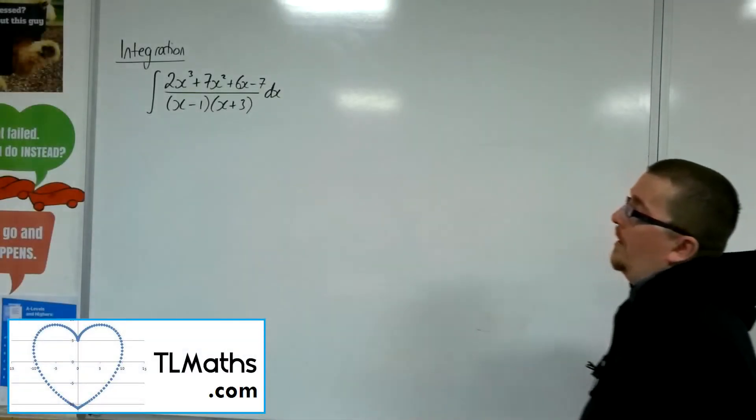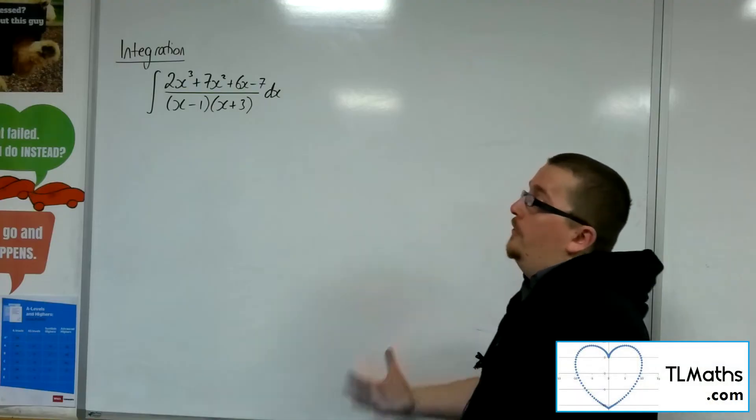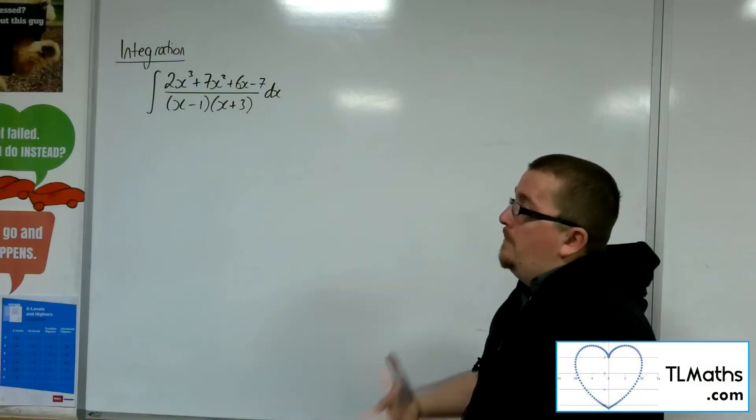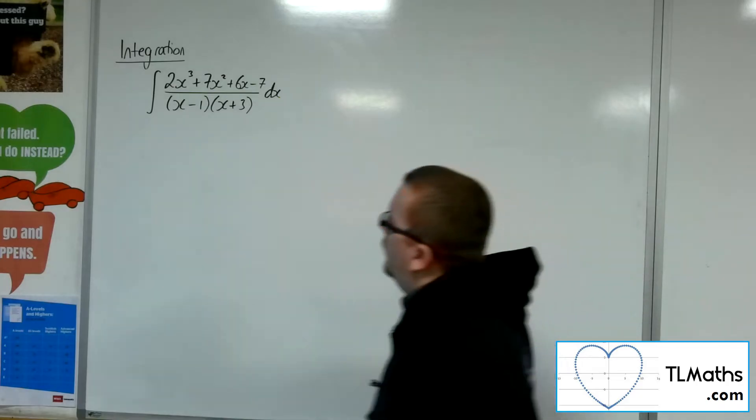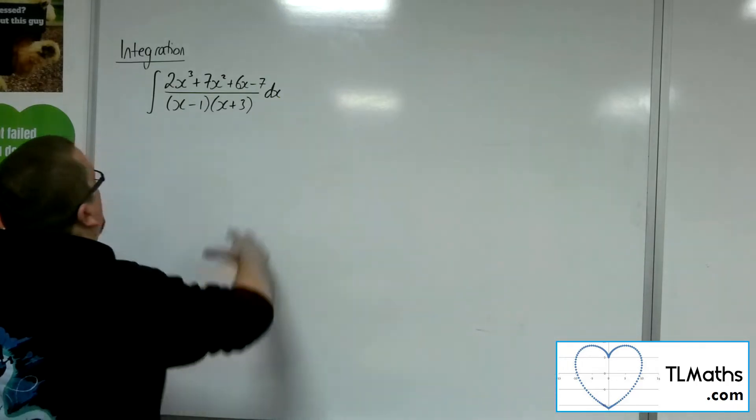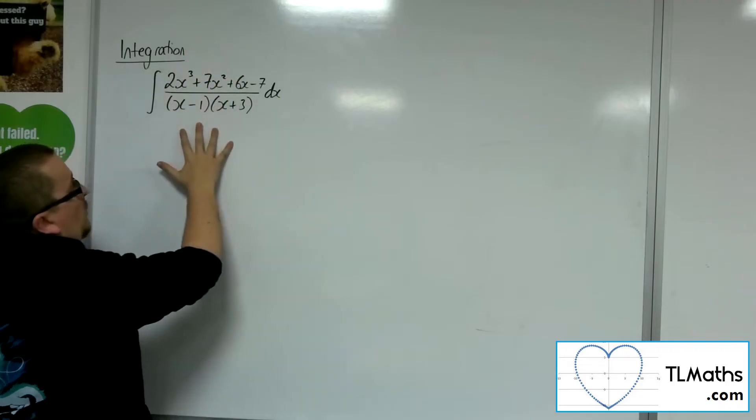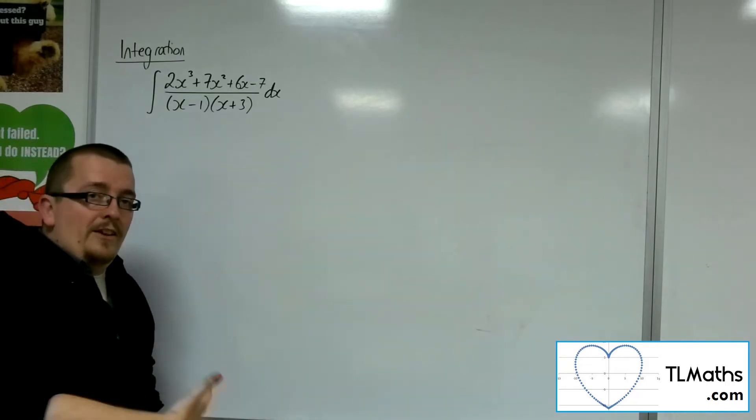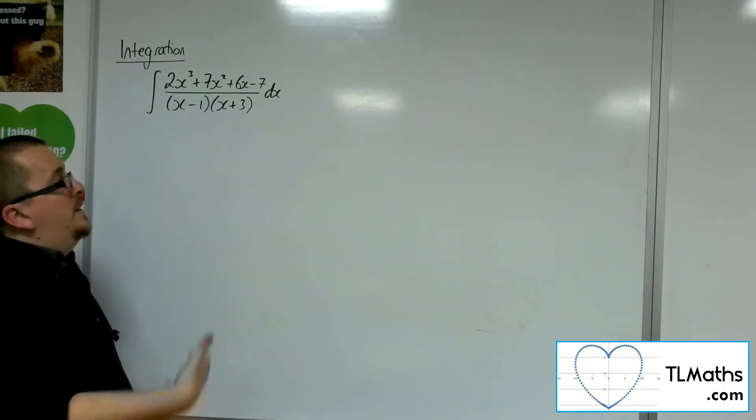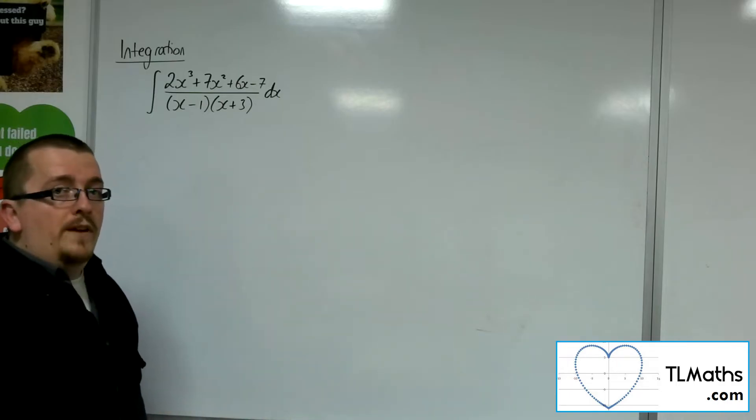Okay, so we're going to go through another problem here where we've got an improper fraction. So I'm going to have to use polynomial division before I use partial fractions in order to integrate this thing here. I've got an improper fraction because I've got a cubic in the numerator and a quadratic in the denominator. It's considered an improper fraction when the highest power of x in the numerator is the same as or greater than the power of x in the denominator.